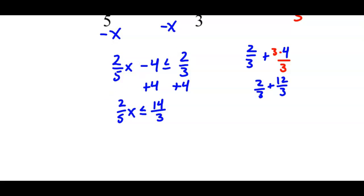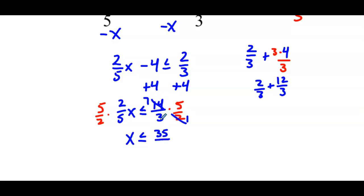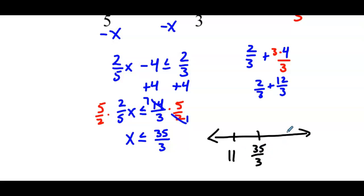Our last step is to multiply both sides by 5 over 2. The 14 and the 2 simplify to give 7, so x is less than or equal to 35 over 3. Setting up the number line: 35 over 3 goes in the middle — 33 over 3 is 11 and 36 over 3 is 12, so it's between 11 and 12. We place a closed point at 35 over 3, and since x is less than or equal to that, we shade to the left.